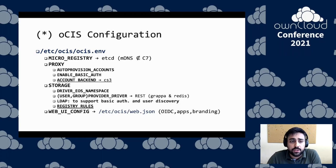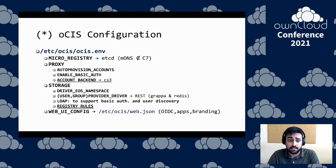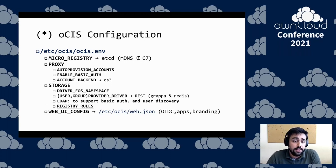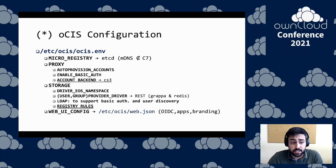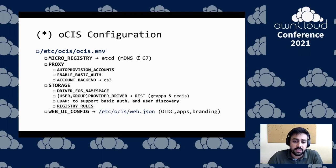For the web UI configuration, we specify things like the OpenID Connect parameters, the applications we are running, the OCIS extensions we are running, plus all the branding for our deployment in a JSON file.